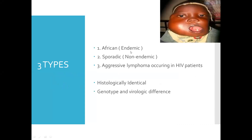There are three types of Burkitt's lymphoma: African, which we also call endemic; sporadic, which is non-endemic; and aggressive lymphoma occurring in HIV patients. We also refer to this third type as aggressive lymphoma in immunocompromised patients. Histologically, all three types are identical; however, the genotype and virology are different.